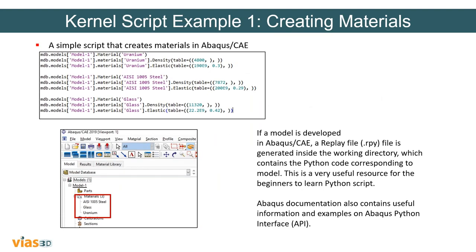Here I'm showing a very simple kernel script for creating materials. In the first line, the script refers to model one. Then we define the material, such as its identity and elastic modulus for that model. Using this simple code, you can automate material creation. You can also do that in Abacus CAE manually, but if you want to produce 10 different models, it's very efficient to create the code and copy it to each new model — essentially copy and paste. That will save you a lot of valuable time.